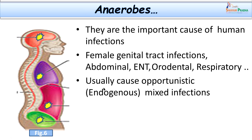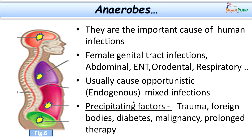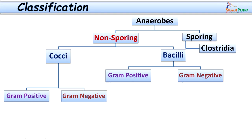They cause opportunistic infections because they take the upper hand whenever there is reduction in immunity, and they are usually mixed infections in nature. Predisposing factors include trauma, especially with lodgement of a foreign body, which will initiate growth of anaerobes due to compromised blood supply. Diabetes, malignancy, and prolonged antibiotic therapy are a few other reasons supporting anaerobic infections.